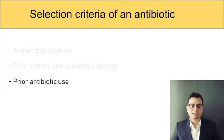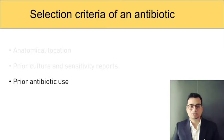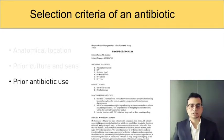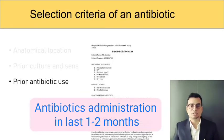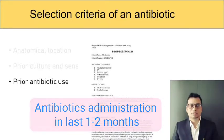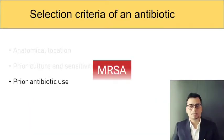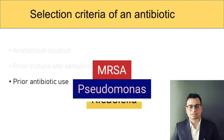While enquiring about the previous hospitalization, always look at the discharge summary and prescription charts to get an idea about the antibiotics the patient was receiving in the past — this is crucial information to guide your antibiotic selection. Previous antibiotic exposure itself is a risk factor for the possibility of acquiring MRSA, Pseudomonas, Klebsiella, and multiple drug-resistant organisms.